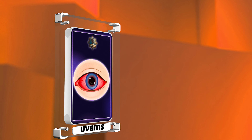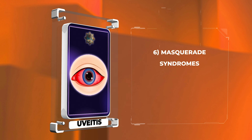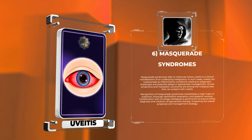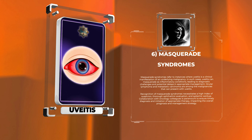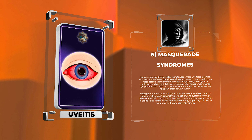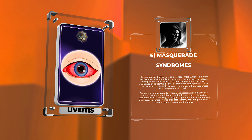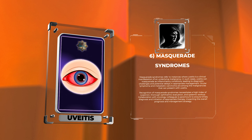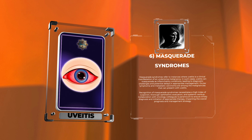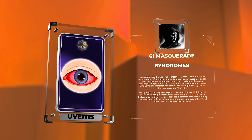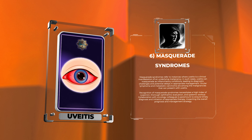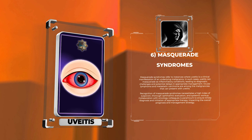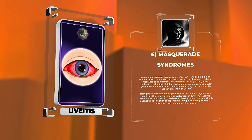Masquerade syndromes refer to instances where uveitis is a clinical manifestation of an underlying malignancy. In such cases, uveitis can masquerade as inflammatory conditions, leading to diagnostic challenges and potential delays in appropriate management. Ocular lymphoma and metastatic carcinoma are among the malignancies that can present with uveitis.